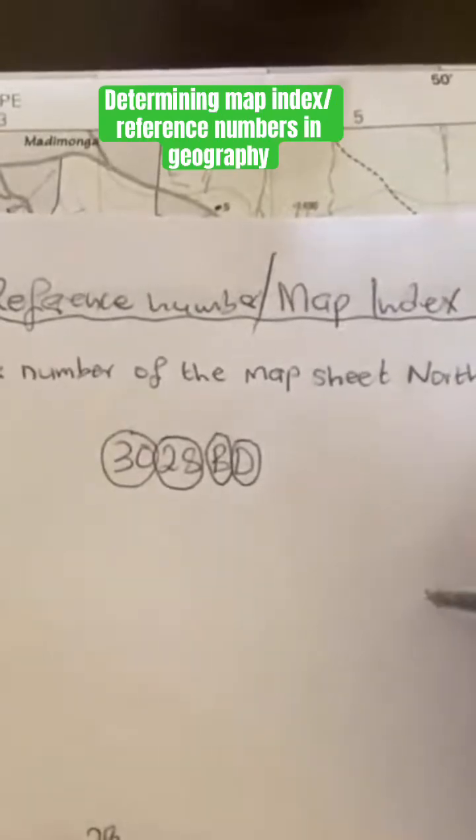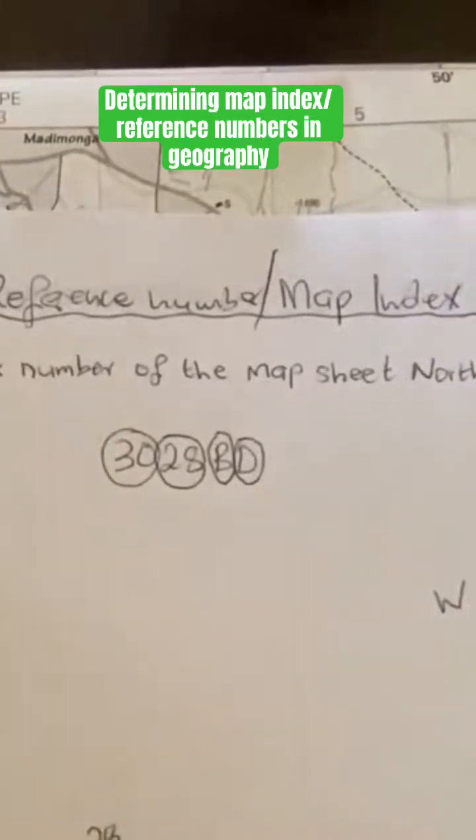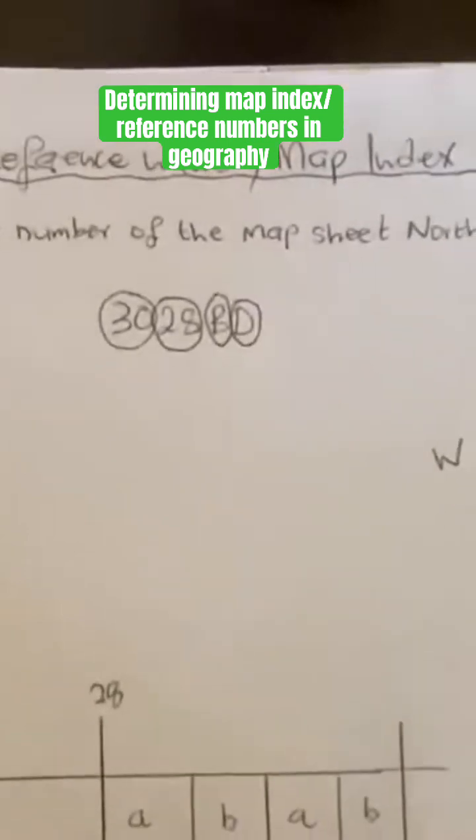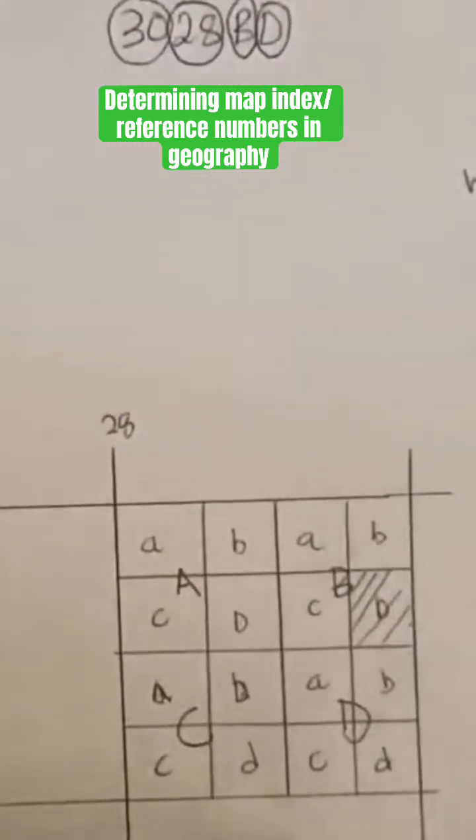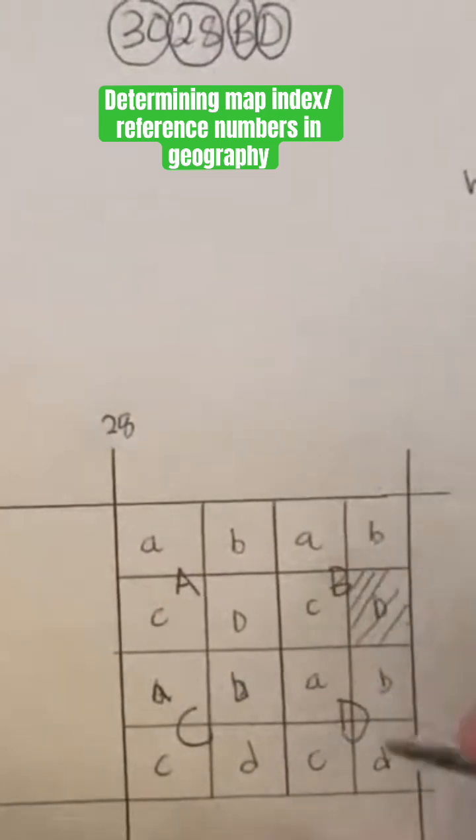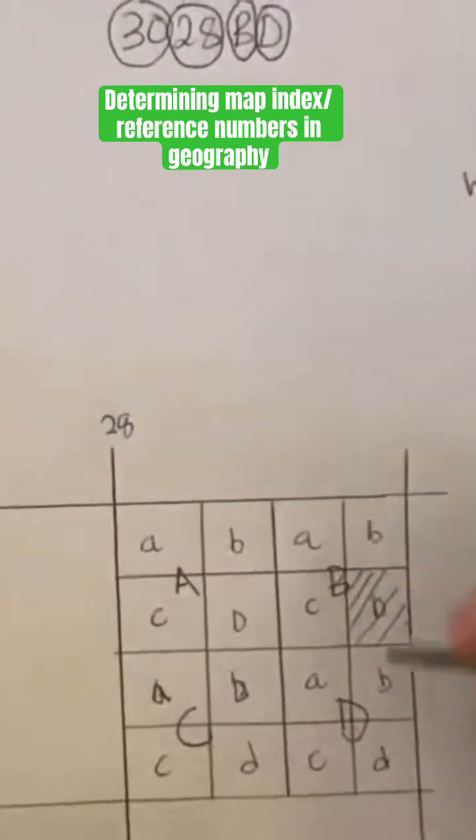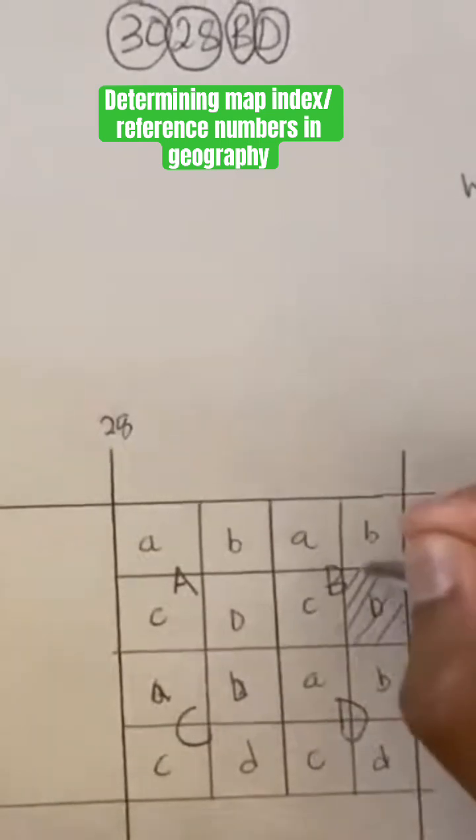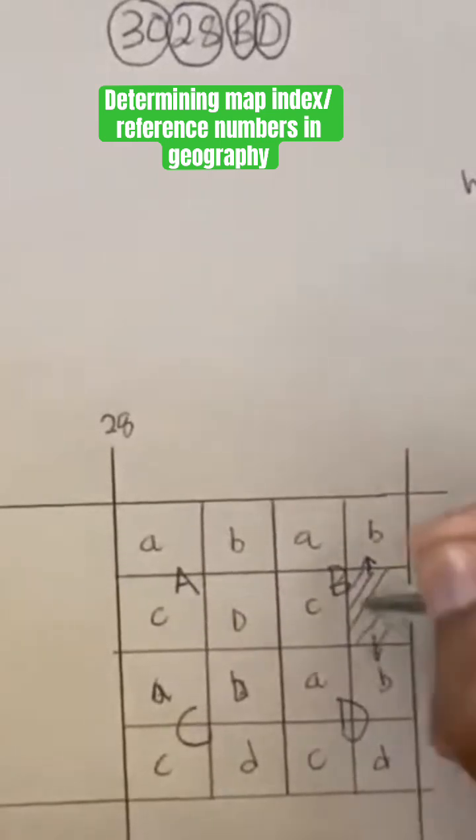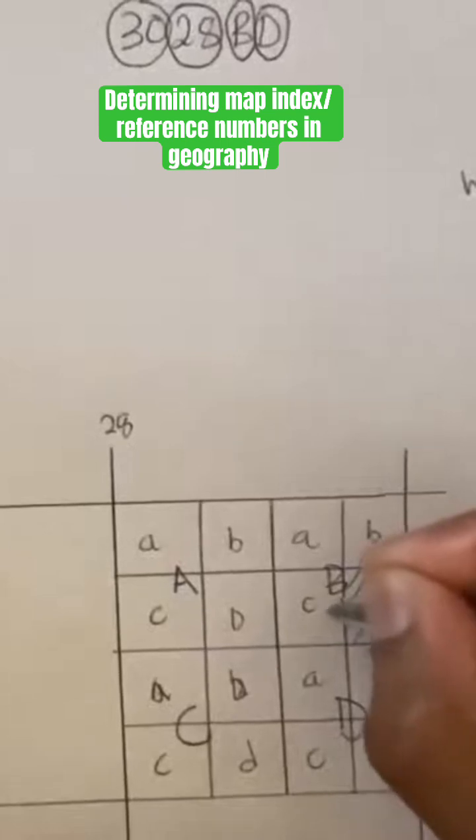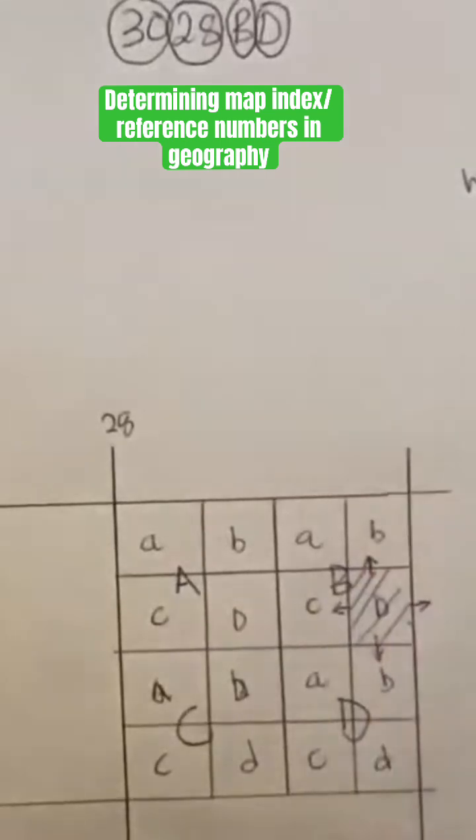And then the side we have our west, right? So normally I tell my students that once you have located your reference point or reference block which you work in, just try to draw arrows indicating your compass directions as I'm doing over here. This will make it easier for you to be able to write your reference numbers or your map index.